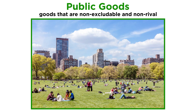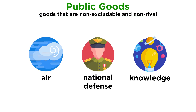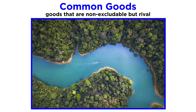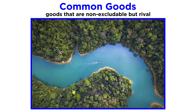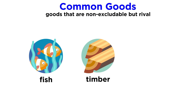Public goods are those that are non-excludable and non-rival — no one can be prevented from consuming them, and anyone who consumes them can do so without reducing their availability to others. Examples include air, national defense, and knowledge. Common goods are products or resources that are non-excludable but rival — pretty much anyone can use them, but if one consumes them, their availability to others is reduced. Examples include fish, timber, and coal.